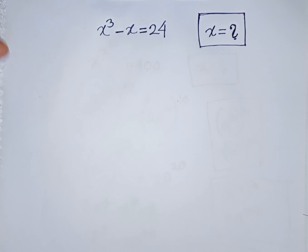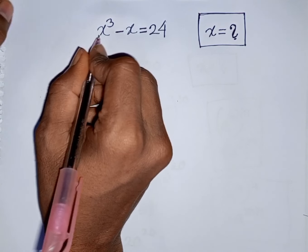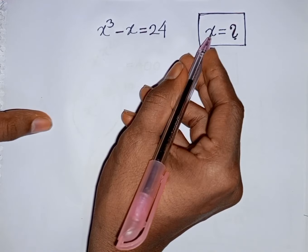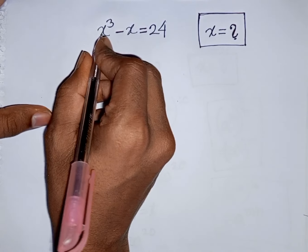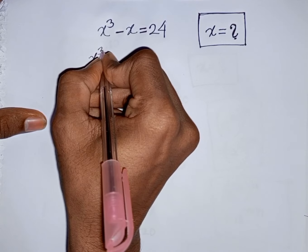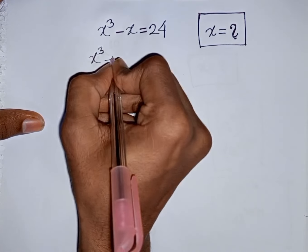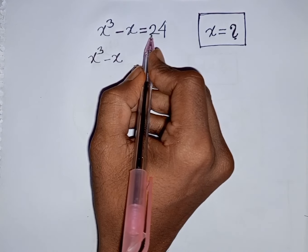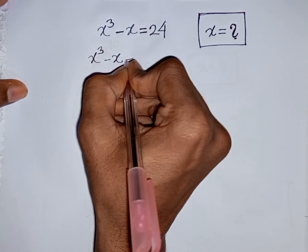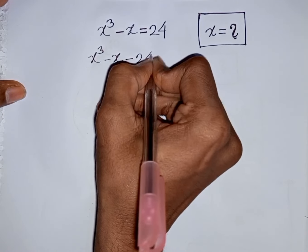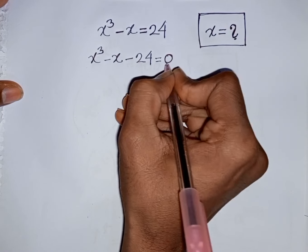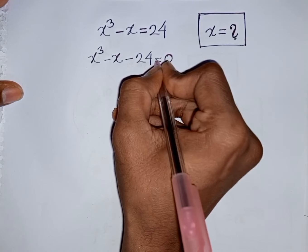How to solve x power 3 minus x is equal to 24. Find the value of x. So, we have x power 3 minus x, then take plus 24 to the left side, so this will be minus 24, and is equal to 0.